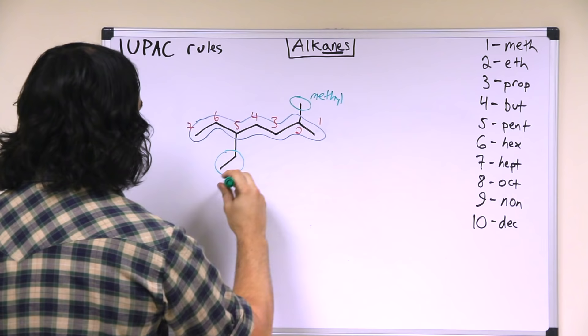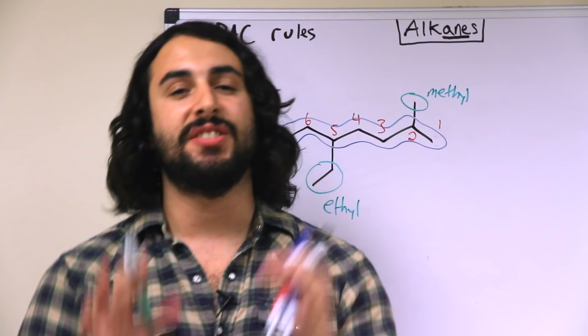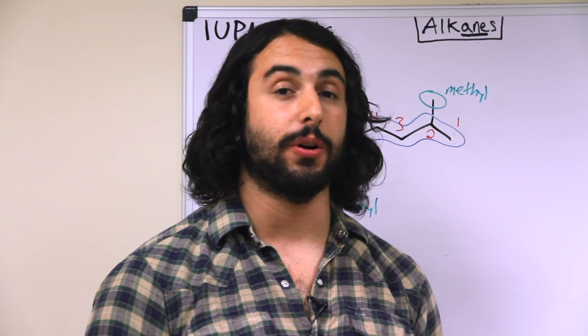So that means that this molecule overall is a heptane, and there is a methyl substituent and this two carbon substituent is an ethyl substituent. So we know that this is a heptane, but now separately from the algorithm that we use to number the molecule, a different algorithm is going to be used to figure out in what order we name all the parts of the molecule.